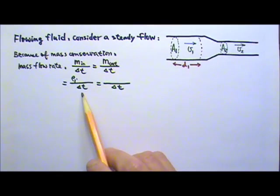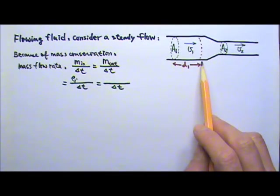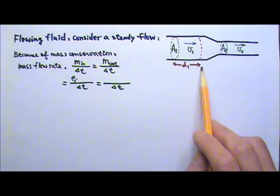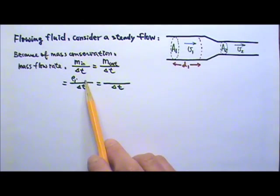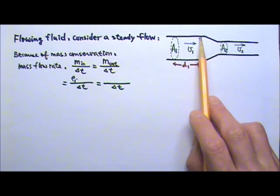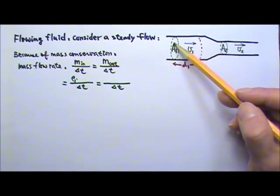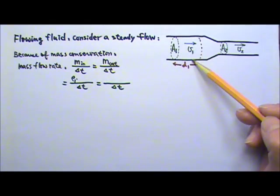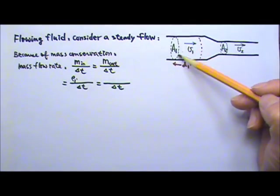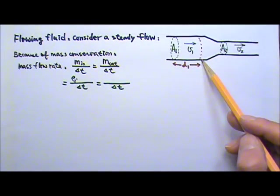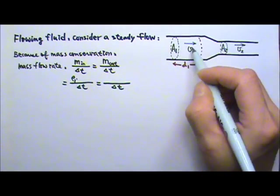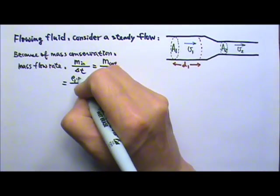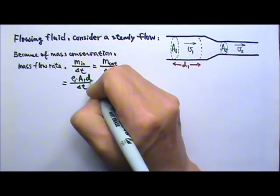Let's say in time delta t, the distance traveled by the fluid is d1, and the mass is density times the volume, and the volume of flow in that time is the volume of this cylinder. The volume of a cylinder is the cross-sectional area times the length of the cylinder. So the volume of flow here is a1 times d1.